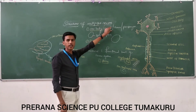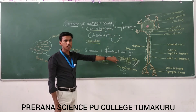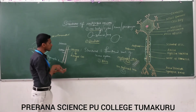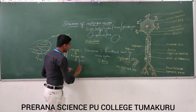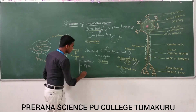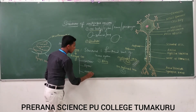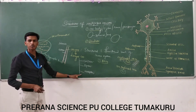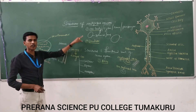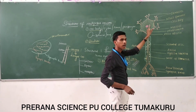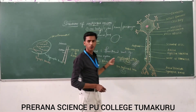Neurons can be classified into three types based on the presence of axon and dendrites. One is called unipolar neuron, another is called bipolar neuron, and the third is multipolar neuron.